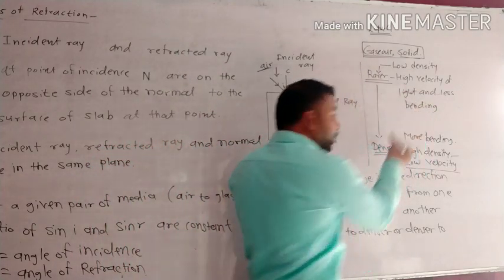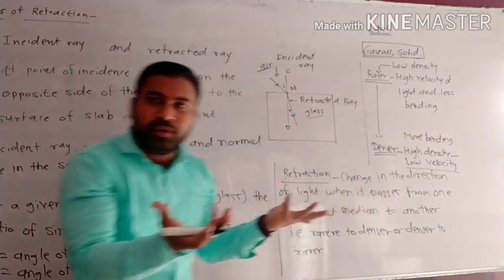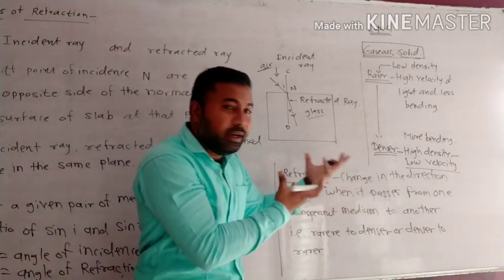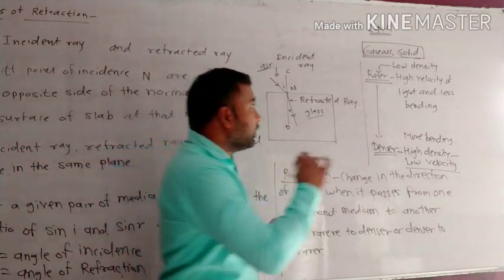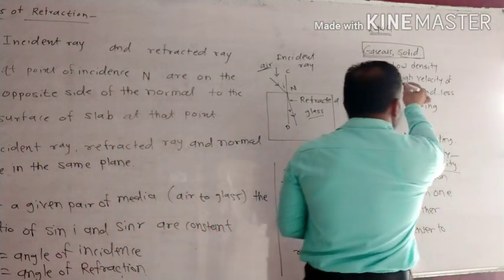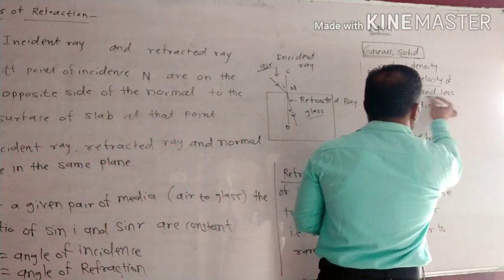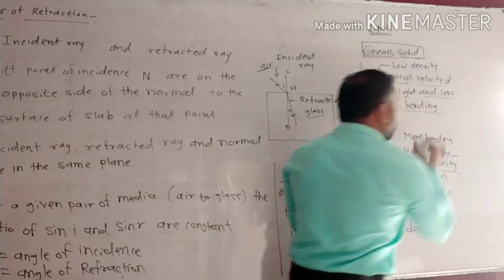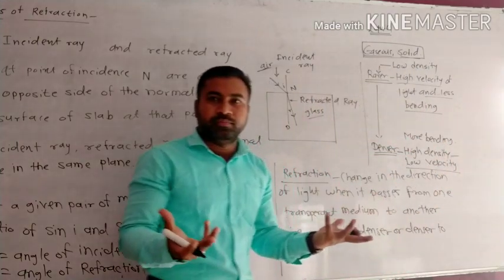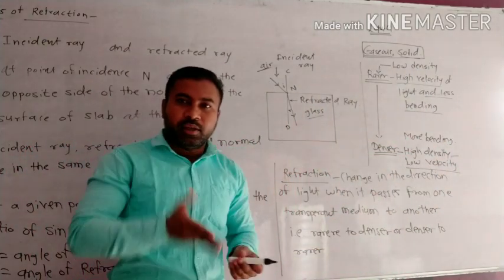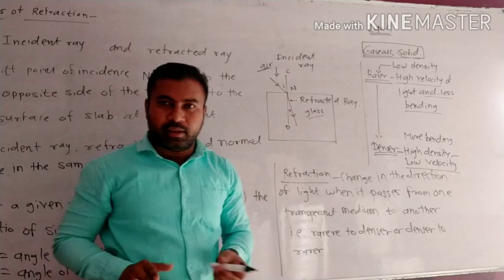What conditions determine the bending of light? When the velocity of light is low, the bending of light is low, and therefore the direction change is low.